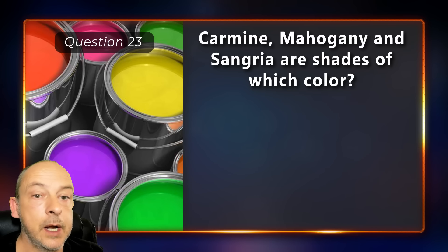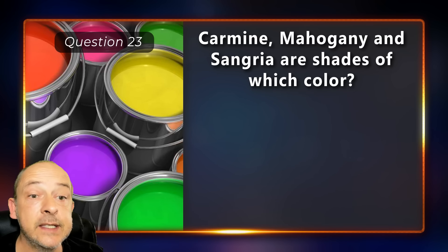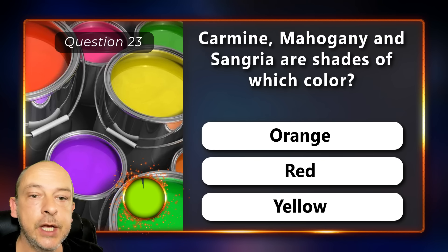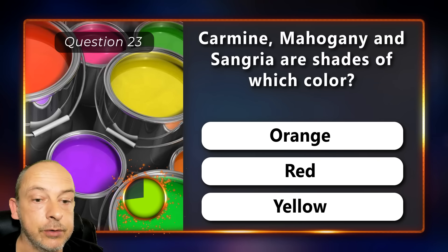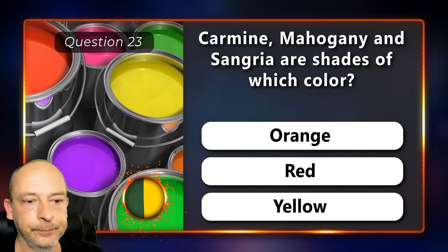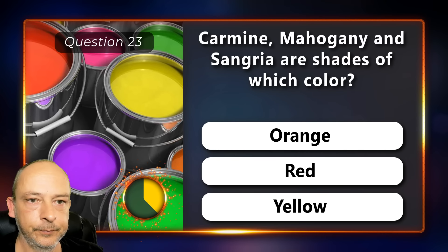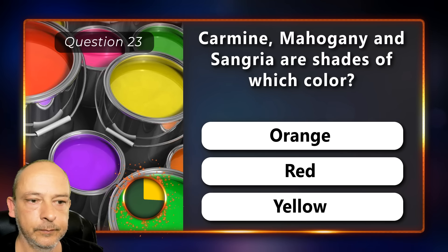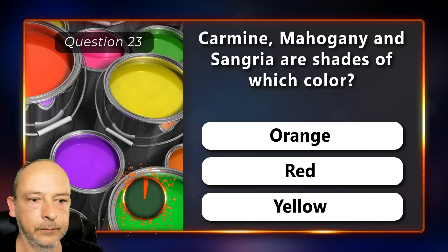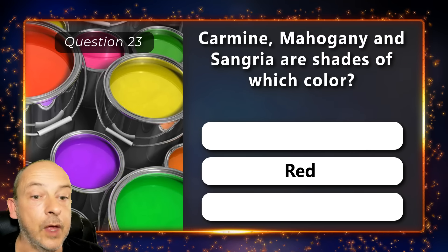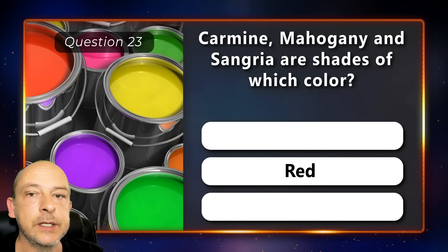Carmine, mahogany, and sangria are shades of which color: orange, red, or yellow? They are shades of red.